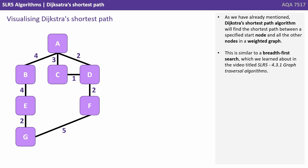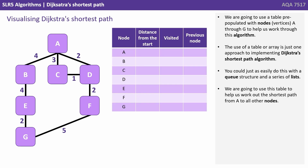Dijkstra's shortest path algorithm will find the shortest path between a specified start node and all the other nodes in a weighted graph. This is similar to a breadth-first search, which we learned about in the video titled SLR 5 Graph Traversal Algorithms. We're going to use a table pre-populated with nodes A through G to help us work through this algorithm, with one row for each. The use of a table or array is just one approach to implementing Dijkstra's shortest path algorithm — you could just as easily do this with a queue structure and a series of lists.